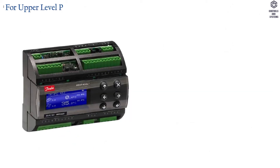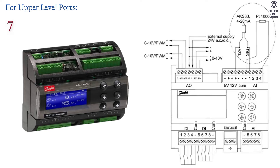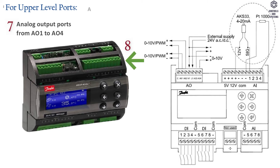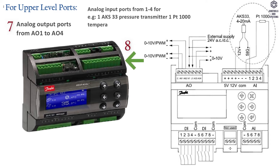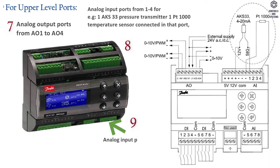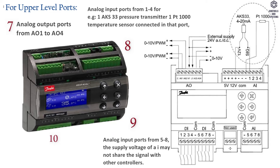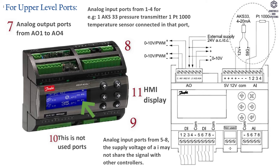For the 4 upper level ports: port 7 is the analog output ports A01 to A04. Port 8 is the analog input ports 1 to 4 — for example, an AKS 33 pressure transmitter or a PT1000 temperature sensor connected to that port. Port 9 is analog input ports 5 to 8. Port 10 is unused ports. Port 11 is the HMI display.